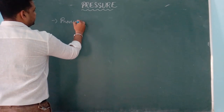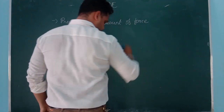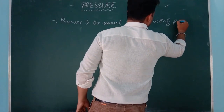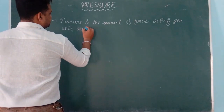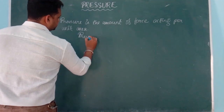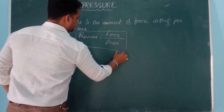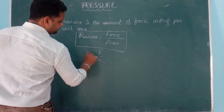Pressure is the amount of force acting per unit area. So pressure equals force divided by area. If we represent pressure as P, force as F, and area as A, then P = F/A.